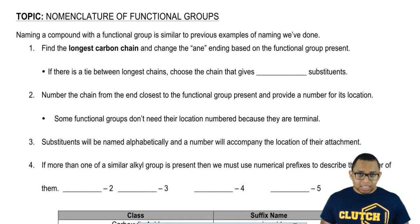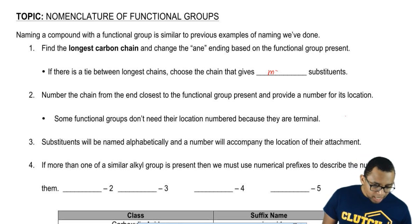Here we can have naming systems for other types of functional groups. We already learned how to name alkanes, alkenes, and alkynes, but there are other groups that exist out there. It's similar to the previous naming experiences we've done. We're going to find the longest carbon chain and change the ANE ending based on the functional group present. If you have a tie in the longest chain, choose the way that gives you more substituents.